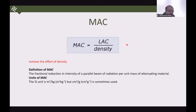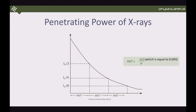To conclude the discussion about linear attenuation coefficient: if attenuation depends on density, we derive the mass attenuation coefficient. This relates to the penetrating power of the beam.